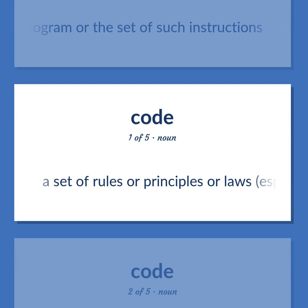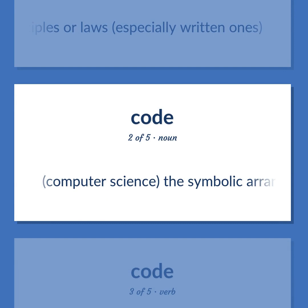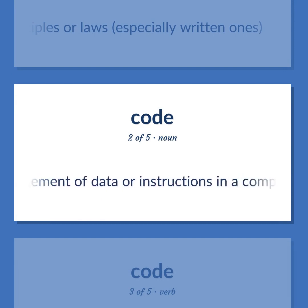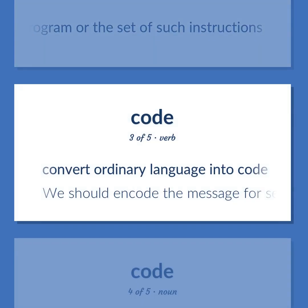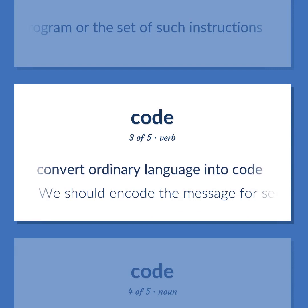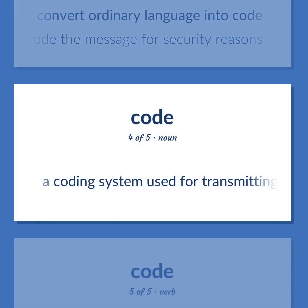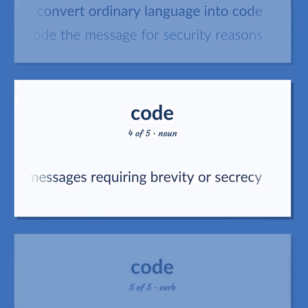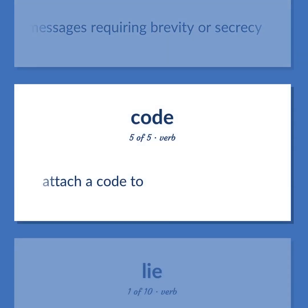A set of rules or principles or laws, especially written ones. Computer Science: The symbolic arrangement of data or instructions in a computer program or the set of such instructions. Convert ordinary language into code. We should encode the message for security reasons. A coding system used for transmitting messages requiring brevity or secrecy. Attach a code to.